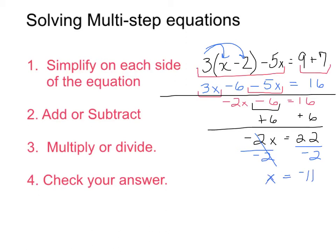Now my next step that I wrote is checking your answer. This is something that I haven't gone over a whole lot, but I would encourage. So I have 3 times negative 11 minus 2 minus 5 times negative 11 is going to equal 9 plus 7, which is basically going to equal 16. So if I use order of operations, I have 3 times negative 13 minus 5 times negative 11 would be plus 55. 3 times negative 13 is negative 39 plus 55 would indeed equal 16. So my answer will check.